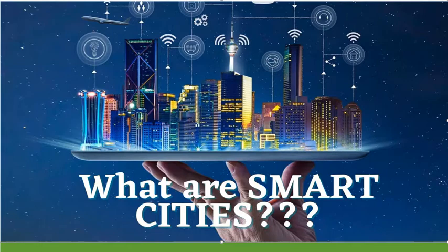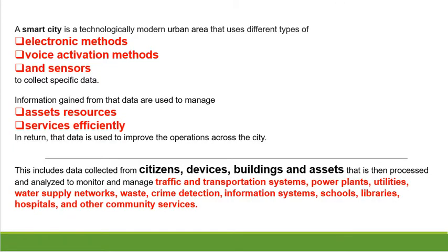First we will discuss and try to understand the basic definition of smart cities, and then I will share a brief report from CNBC which will help us understand smart cities more clearly. A smart city is a technologically modern urban area that uses different types of electronic methods, IoT activation methods, and sensors to collect specific data. The main basic aim is to collect data, and the information gained from that data is used to manage assets, resources, and services efficiently.